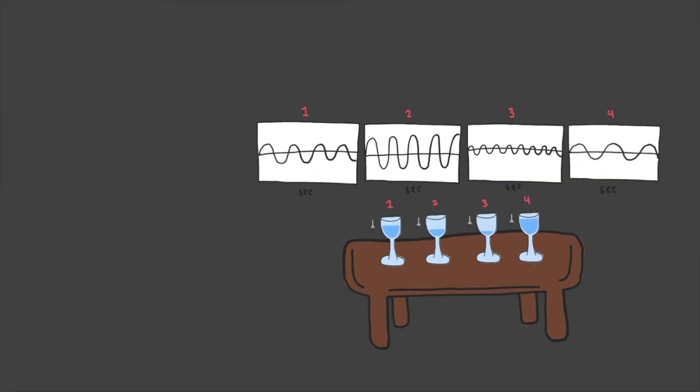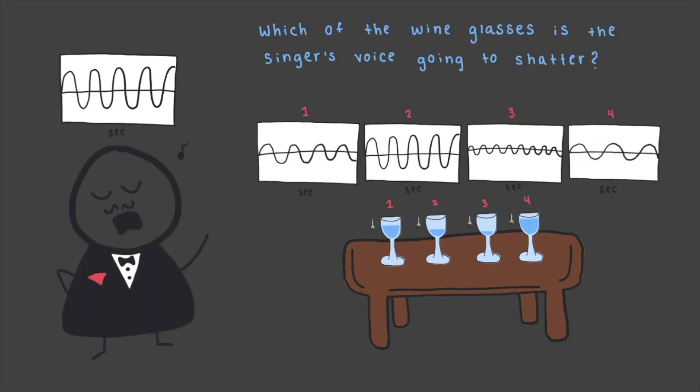Now picture an opera singer in the room. The singer's voice is hitting a note with this frequency that is shown on the graph. Which of the wine glasses is the singer's voice going to shatter? Only the second wine glass is going to shatter because the singer's voice and that wine glass are in resonance. The energy exchange that occurred caused the wine glass to shatter.